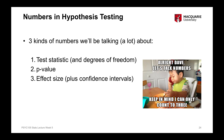Effect sizes are really, really important, particularly when we're doing applied research, because they tell us how practically important or practically meaningful this particular effect is. The effect size tells us the actual size of the effect — the size of the difference between the groups, the strength of the relationship between two variables, and how meaningful or important the effect is. The meaningfulness, or practical importance of the effect, is often quite different to the statistical significance of the effect, because there are other things that affect statistical significance, such as the sample size.